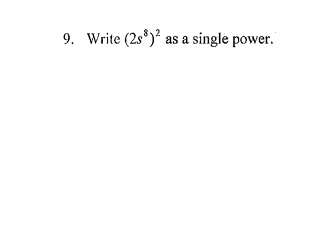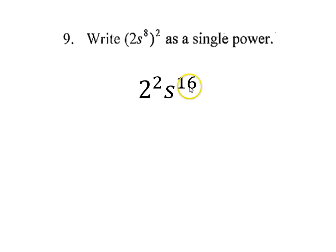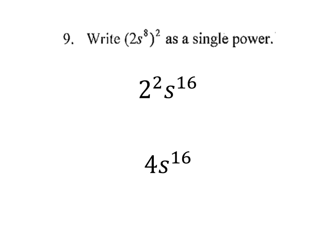Number 9, we're going to write this as a single power. So I have 2s to the eighth squared. Once again, I have everything inside the parentheses to the second power. So I'm going to have 2 to the second power and s to the eighth to the second power. This is going to look like 2 squared times s to the sixteenth. The 2 squared comes from 2 to the second power, and s to the sixteenth comes from s to the eighth squared — since I have a power to a power, I multiply to get 16. I know 2 squared is 4, and s to the sixteenth is just s to the sixteenth. And this is our answer.